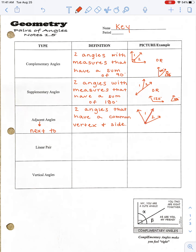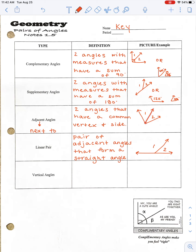A linear pair — when I hear the word linear, I think of a straight line. A linear pair is a pair of adjacent angles that form a straight angle, or in other words, they add up to 180. So these are also supplementary angles. This is a linear pair because the angles add up to 180 and they're touching — they're next to each other and share a common side.